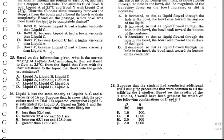Question number 25: Based on the information given, what is the correct ranking of liquids A to C according to the resistance to flow, which means viscosity, at 25 degrees Celsius? From the liquid that flows with the least resistance to the liquid that flows with the greatest resistance. When we talk about resistance, we are talking about the viscosity.